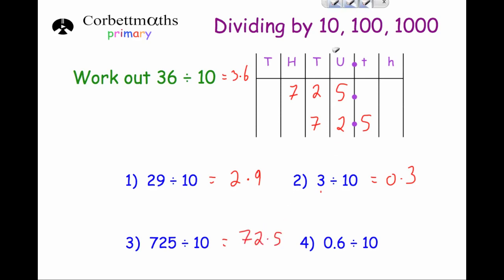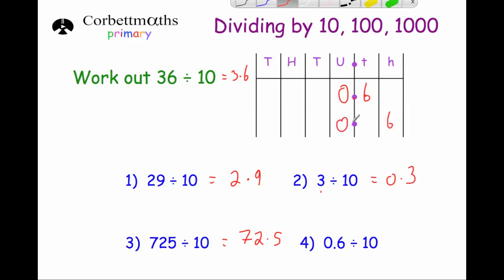If we were dividing 0.6 by 10, the 6 is in the tenths column. It will get 10 times smaller and move to the hundredths, and we put in zeros as placeholders. The answer will be 0.06. So if we divide a number by 10 that doesn't end in a zero, we just move all the digits one column to the right in our place value — in other words, all the digits get 10 times smaller.